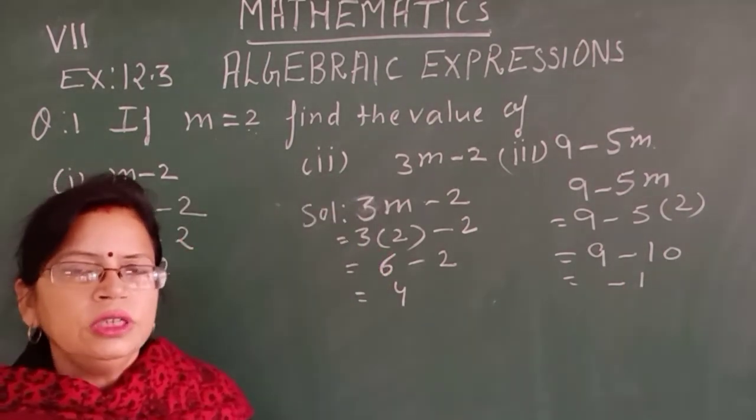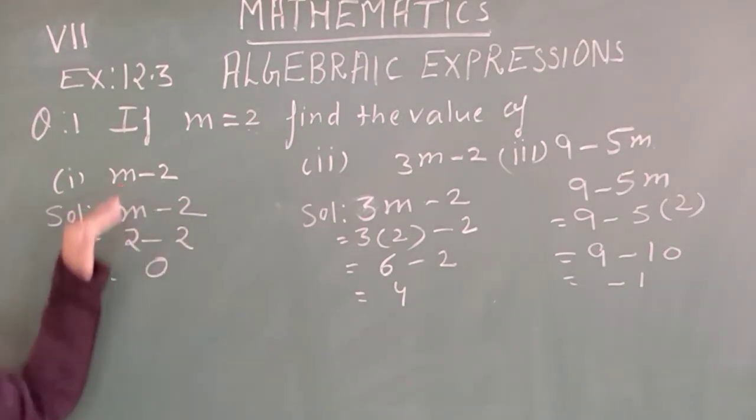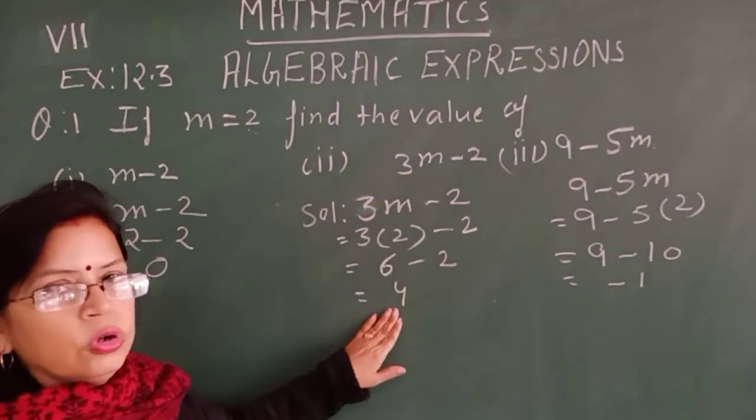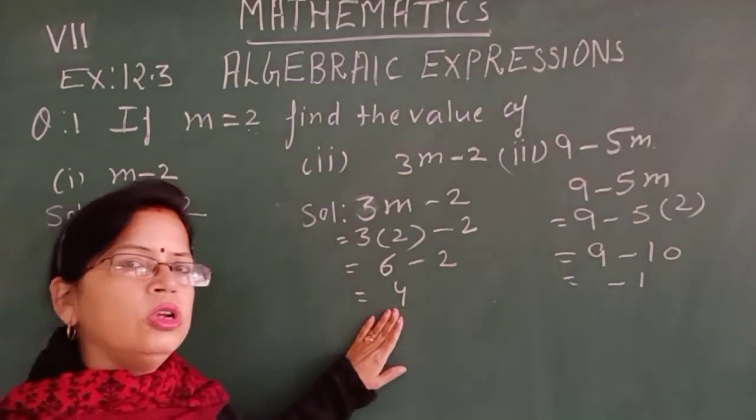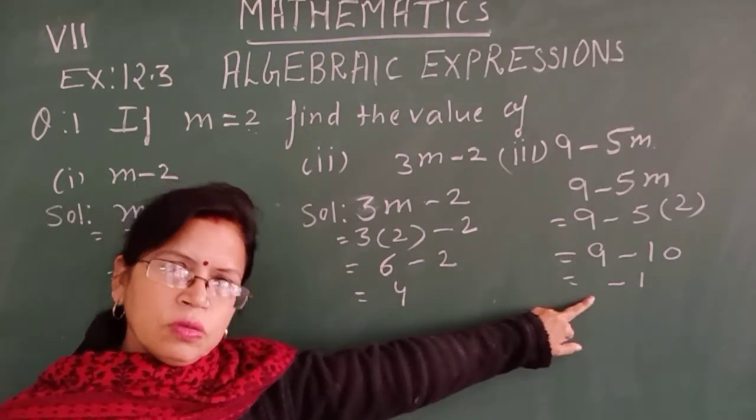So in this way, value of m is given as 2, and first part solution is 0, second part is 4 after placing the value for m, and in third part value is minus 1.